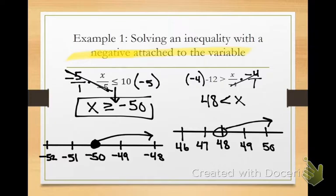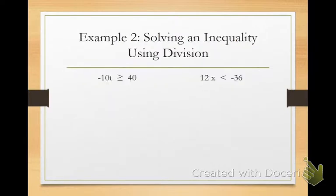Now, in example two, we're now just going to solve an inequality using a different operation. Now there's multiplication that's connected to my variable. So I still stick with my inverse operations. Go ahead and solve the first one. Go ahead and solve for t. So we want to divide both sides by negative 10. So now t, wait, why did I reverse my inequality? Because the negative was attached to my variable. I had to divide. t is less than or equal to negative 4.